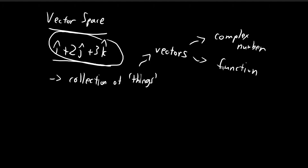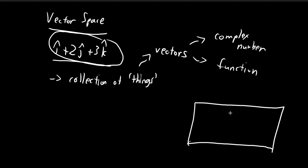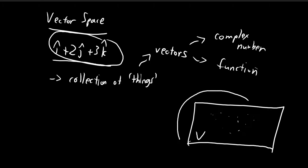To illustrate what a vector space might look like, let's say we have a collection or a set of mathematical objects. These objects could be things such as complex numbers or functions, and let's call this set V. This set could be something like the set of all possible complex numbers, or the set of all functions where f(0) = 0. A vector space is actually a set of mathematical objects just like this.